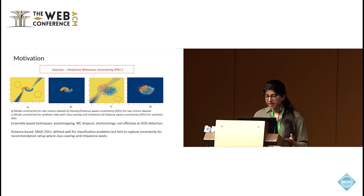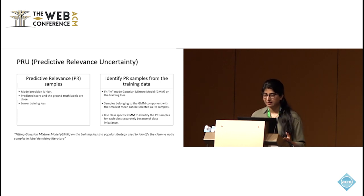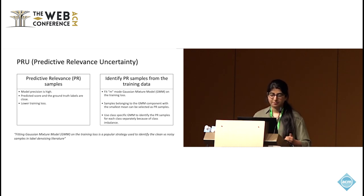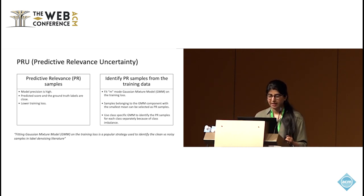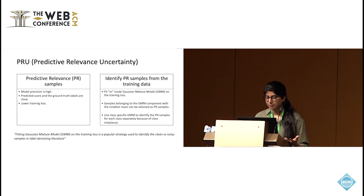We therefore propose PRU to quantify uncertainty in recommendation systems. In PRU, uncertainty for a sample is defined as its distance from the predicted relevant samples of the training data. PR samples are the samples where the model precision is high — the predicted score and ground-truth label are close — and therefore they have lower training loss. We first identify the PR samples from the training data by fitting an M-mode GMM on the training loss, where samples belonging to the GMM component with the smallest mean are the PR samples. Since the loss distribution varies for both classes due to class imbalance, we use class-specific GMM to identify PR samples for each class separately.